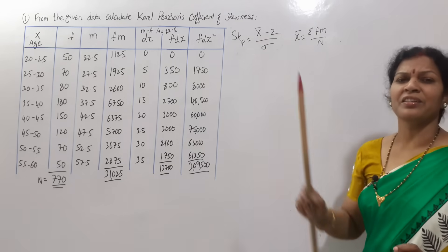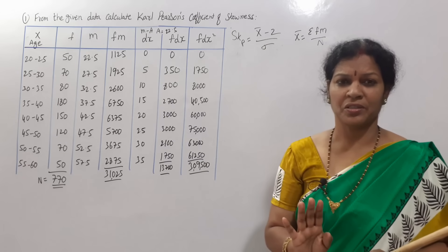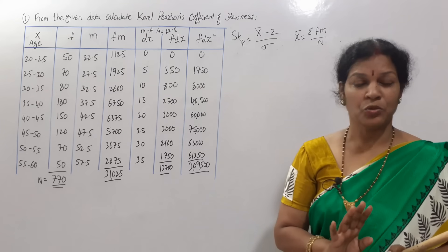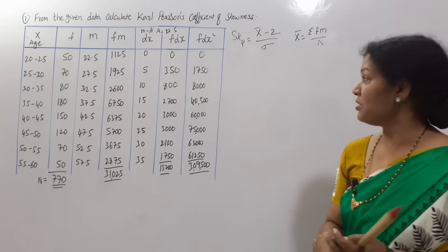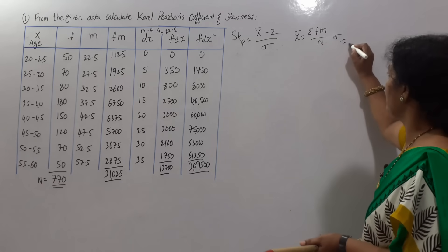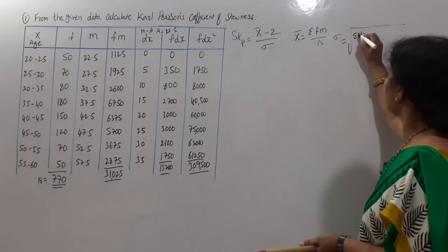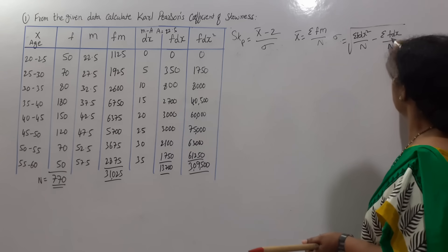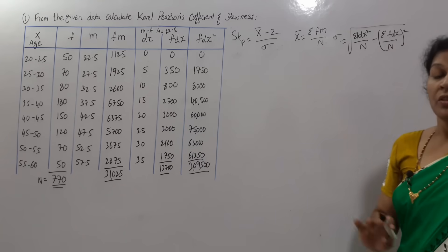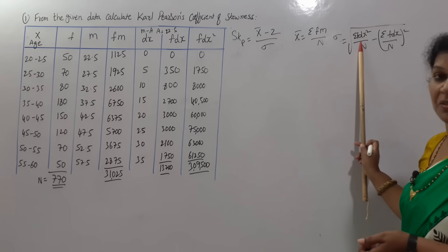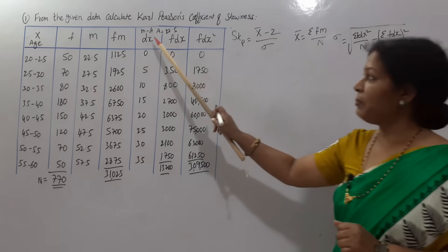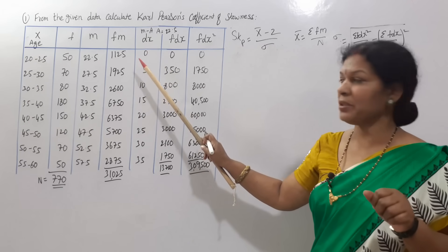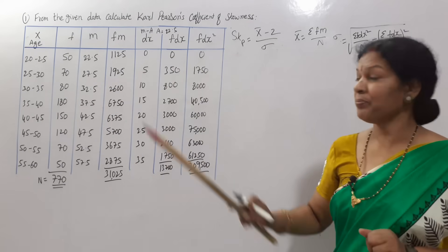We got f m. These are the four columns we have prepared for x bar. To calculate z we do not want any columns, we can prepare it by inspection mode. For z there is no column required. Next, standard deviation. What is the formula? Root of sigma f d x square by n minus sigma f d x by n whole square.